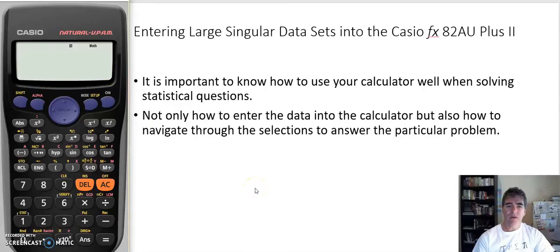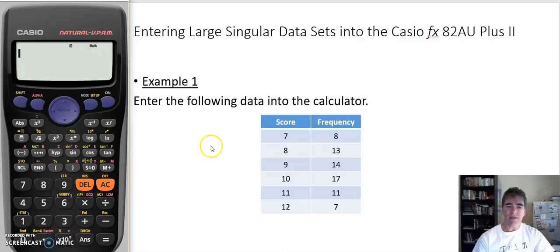Here's a large data set. How do I know it's large? Well, I've got a frequency column here that tells me how many of each score there was. So there were eight sevens, thirteen eights, fourteen nines, seventeen tens, eleven elevens, and seven twelves. I don't want to have to put in all eight sevens and then all thirteen eights. I want the calculator to be able to make that easy for us.